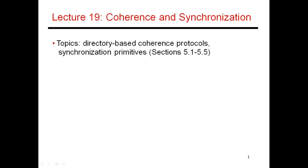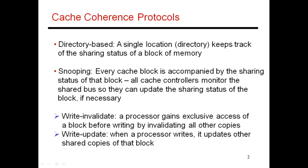In the last video, we focused on a snooping-based protocol. In this video, I'll look at a directory-based protocol in more detail. Those are the two main axes along which these protocols are split. You can also implement protocols with either a write-invalidate or write-update policy. An invalidate-based policy is much more bandwidth efficient, which is why I'll now focus on a protocol that implements a write-invalidate policy and a directory-based approach.